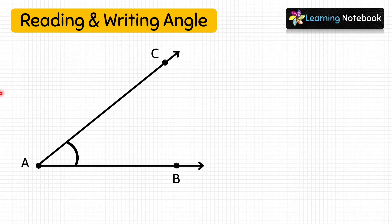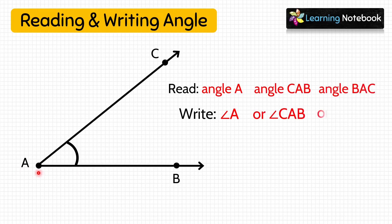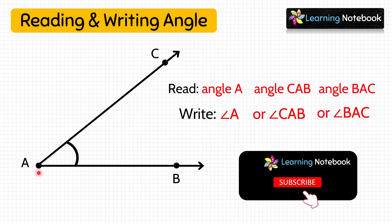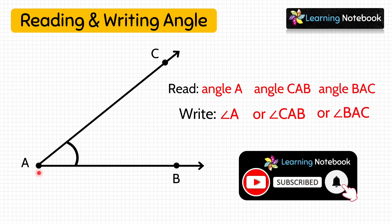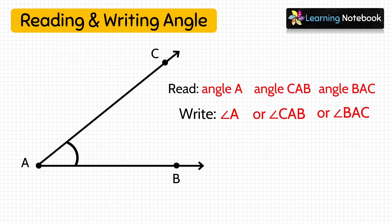To name an angle we need three points, and the point at which an angle is formed will always be in the middle. Here the angle is formed at vertex A, so A will always be in the middle while naming this angle. So we can read and write this angle as angle A, or angle CAB, or angle BAC — all three ways are correct.